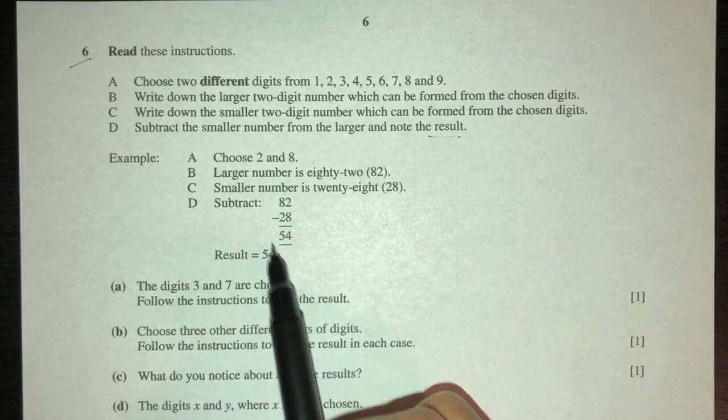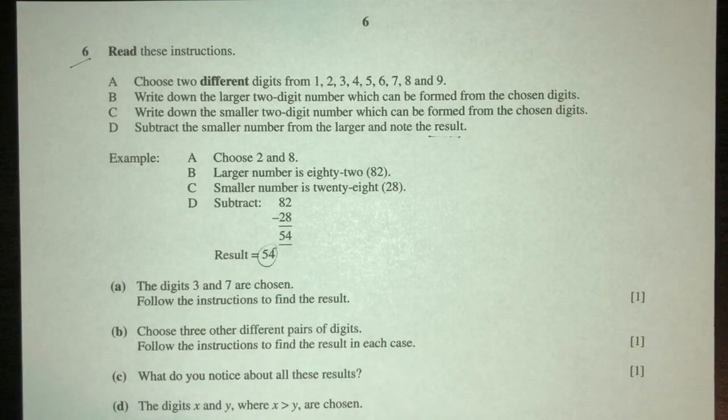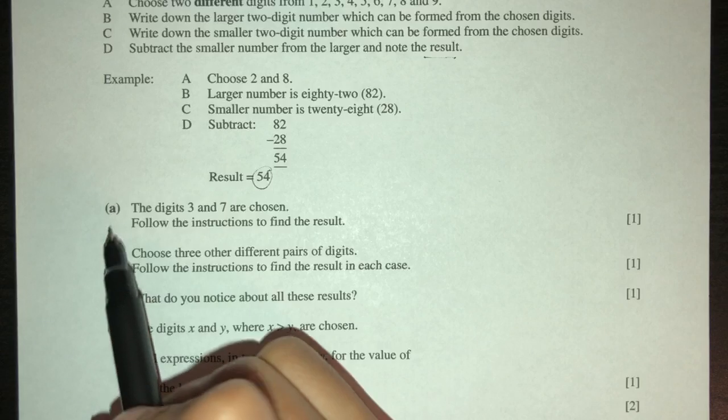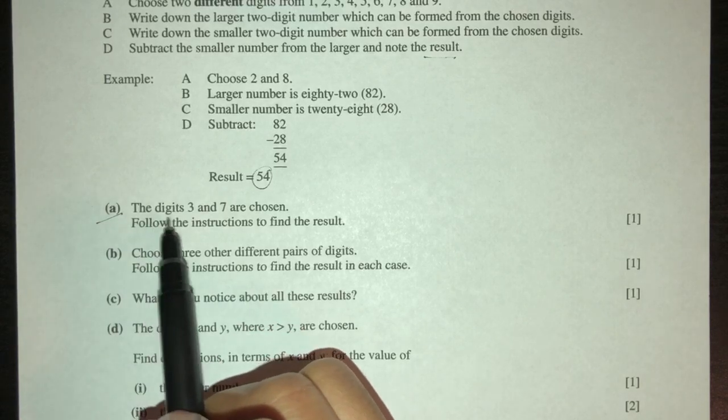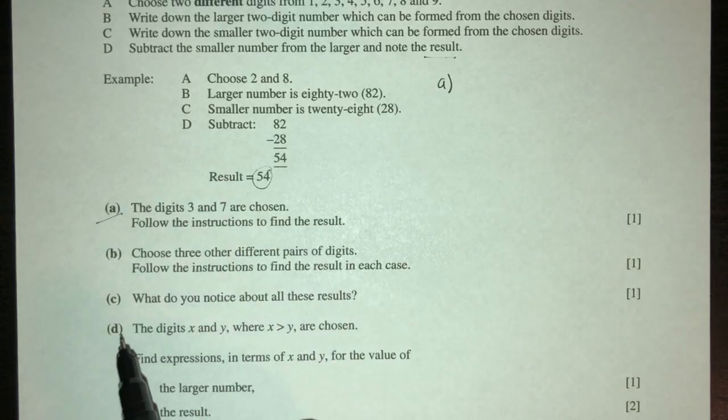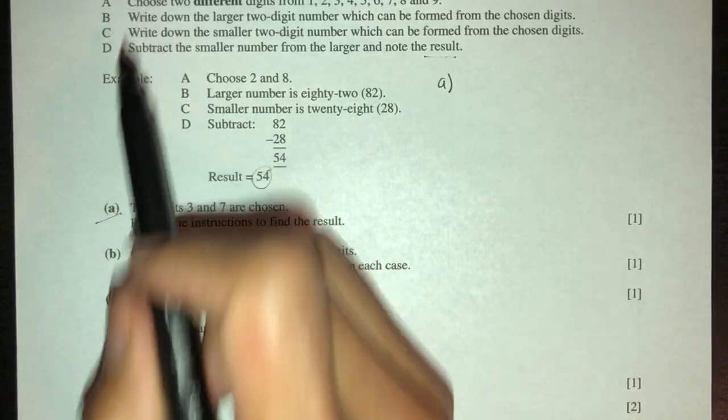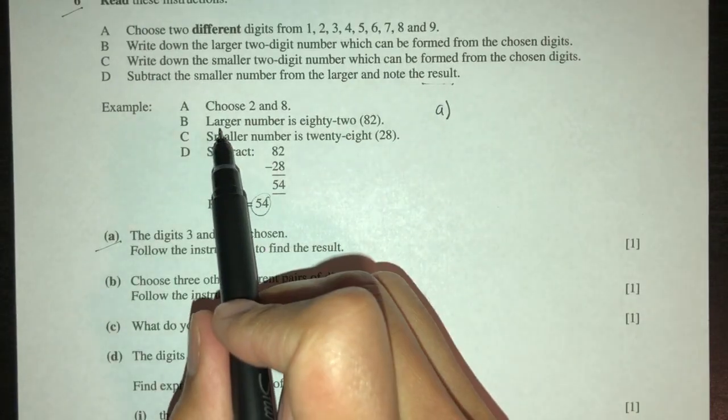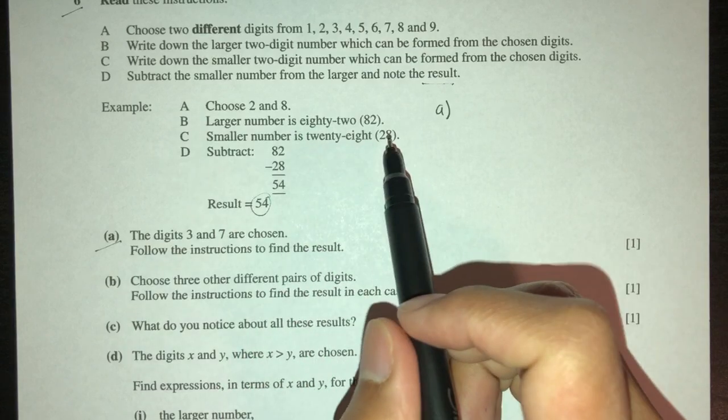Now part D, subtract - that will be 82 minus 28, that will give you 54. That is the example. Now part (a), we have to do this one. Let's say we have 3 and 7, so we have 3 and 7.